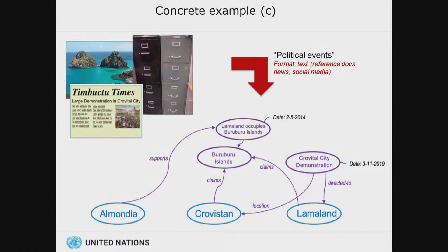Now let's put in some political context. The islands at the top are the Buruburu Islands, and they belong to Krovistan — at least Krovistan likes to think so. But much to their dismay, Lama Land has occupied the Buruburu Islands since 2014, and they get away with it because they're being supported by Almandia, which is a super powerful country. We have all that in our UN archives in all this political context. And then we come across a newspaper article saying demonstrations in the capital of Krovistan — people demonstrating against Lama Land. Our analysts pick up these articles every day. Taking newspaper articles and doing sentiment analysis — that's really what my team does.